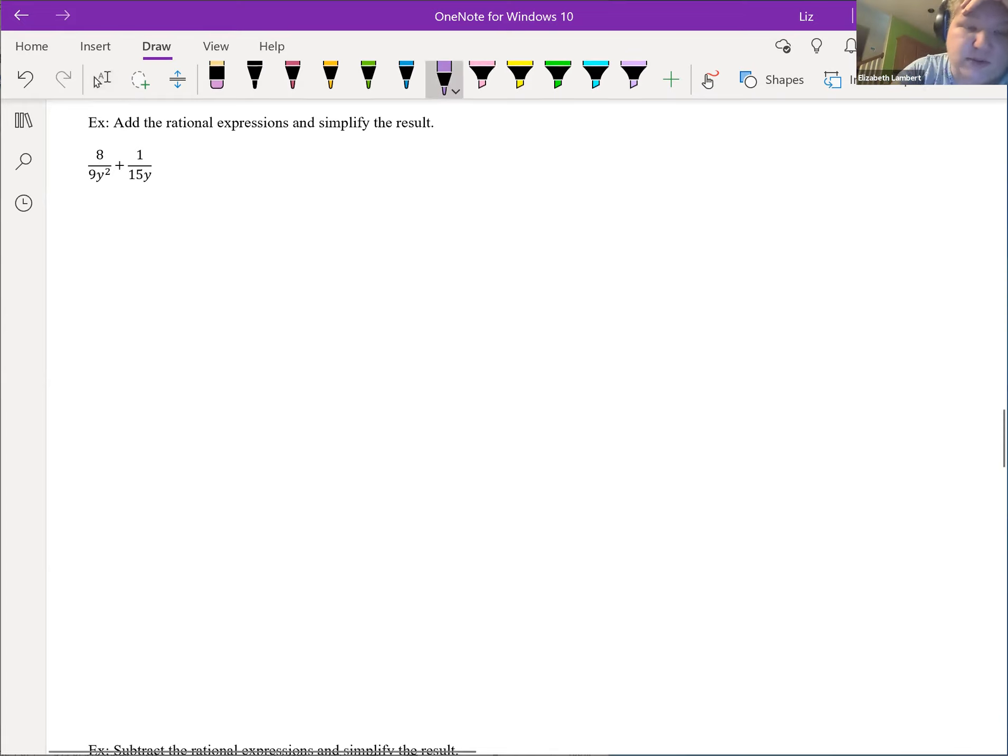9y squared, that's really 3 times 3 times y times y. So the LCD, I need to see two 3s, so 3 times 3, I need a 5, and I need two y's. That's everything I want to see in my least common denominator. I could actually multiply that and get 45y squared. We'll get that eventually. But for now, I'm actually going to leave it like that and just focus on what am I missing.